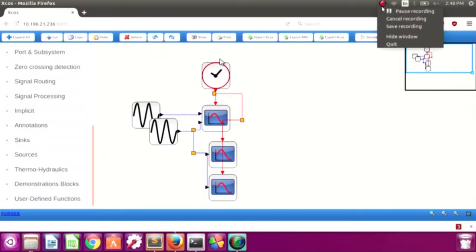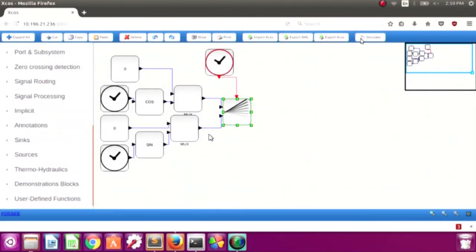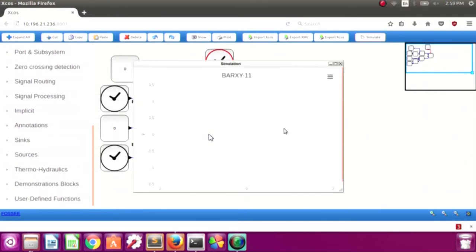This is the bar XY diagram and I have shown the parameters. Now the parameters change will be reflected here. This is also done in a dynamic fashion.